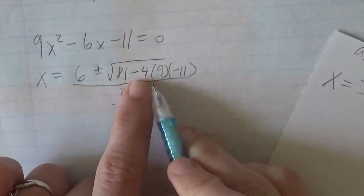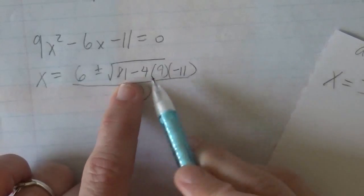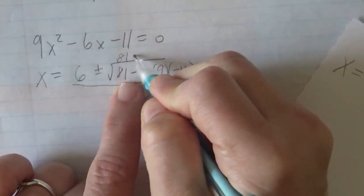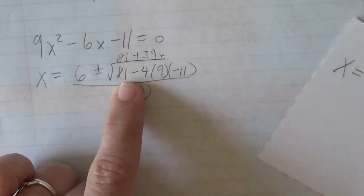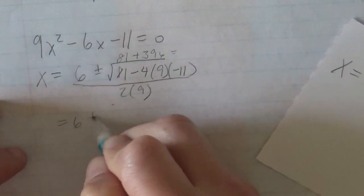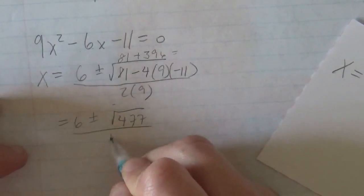So we have 4 times 9 times 11. 4 times 9 times 11 is 396, and that's negative negative, so it's positive 396. So it's 81 + 396 in there. Lovely. So we have 477. So it's 6 ± √477 all over 18.